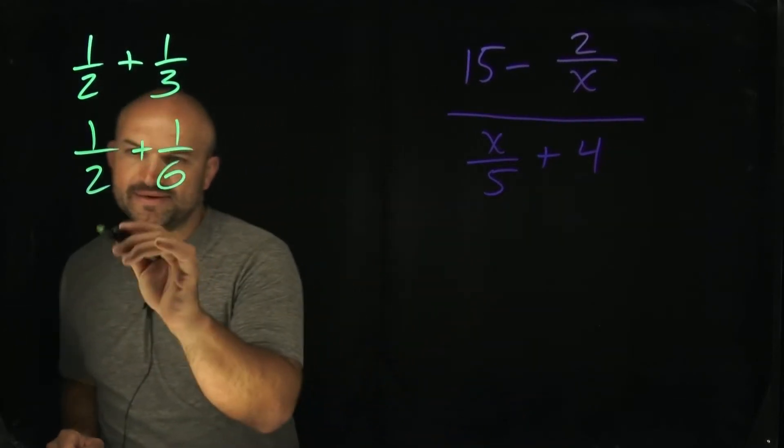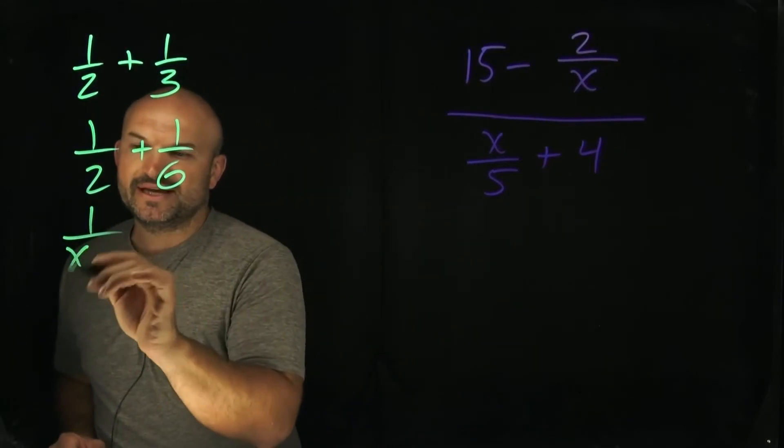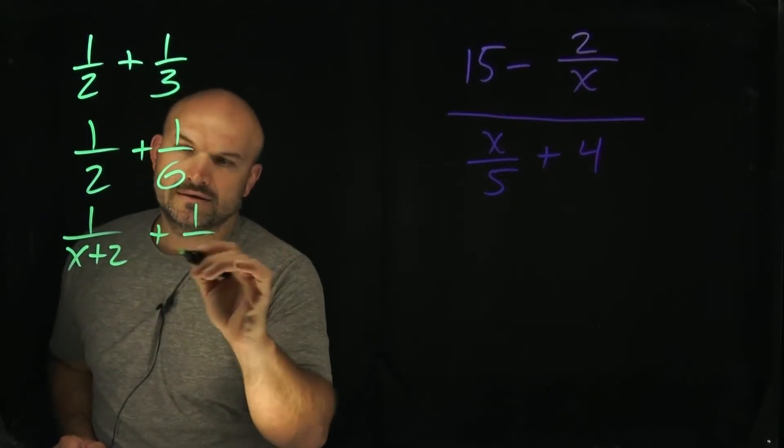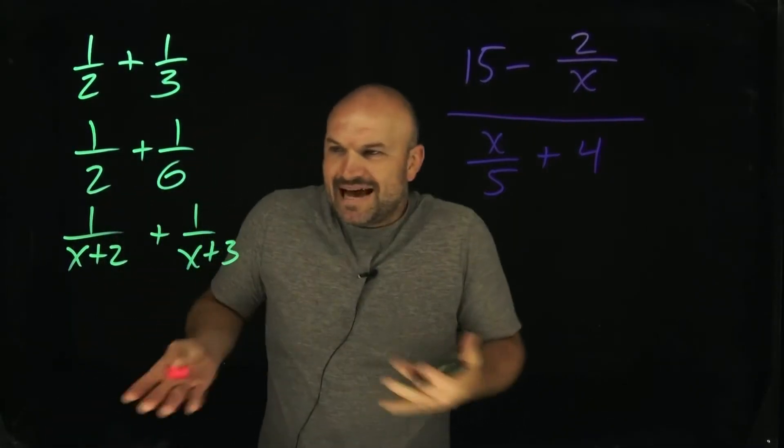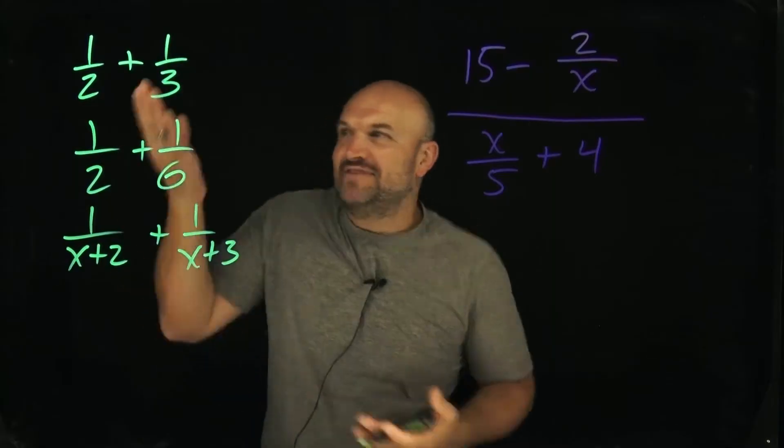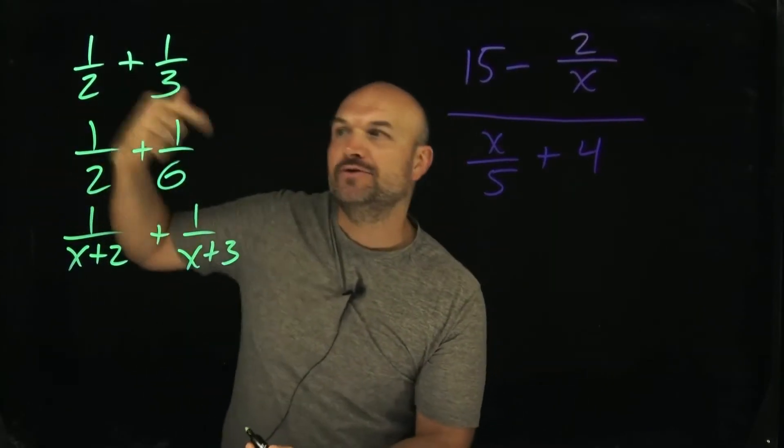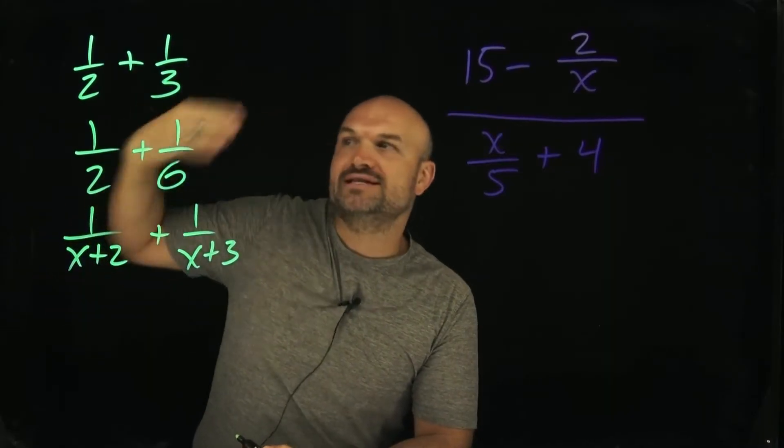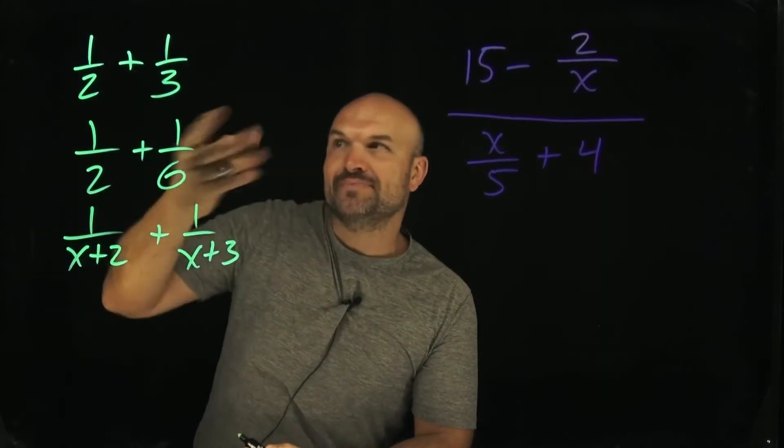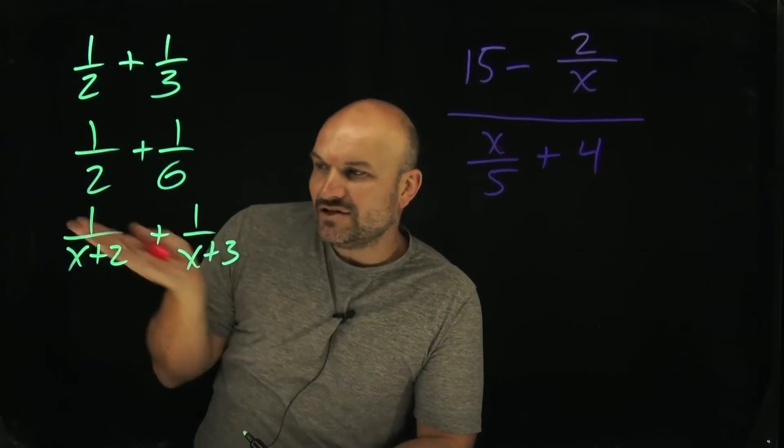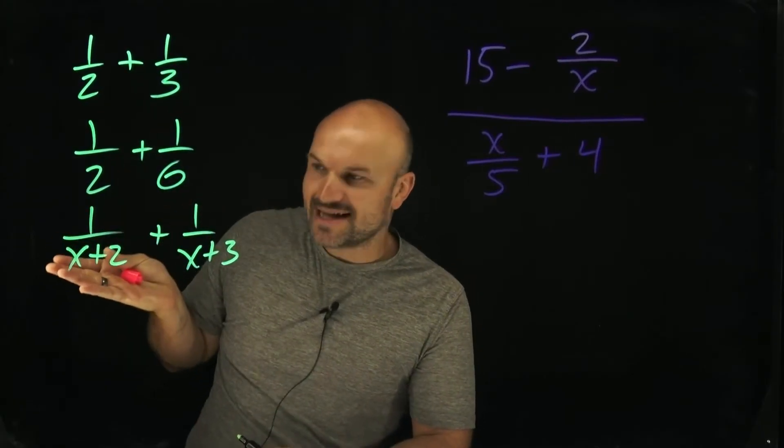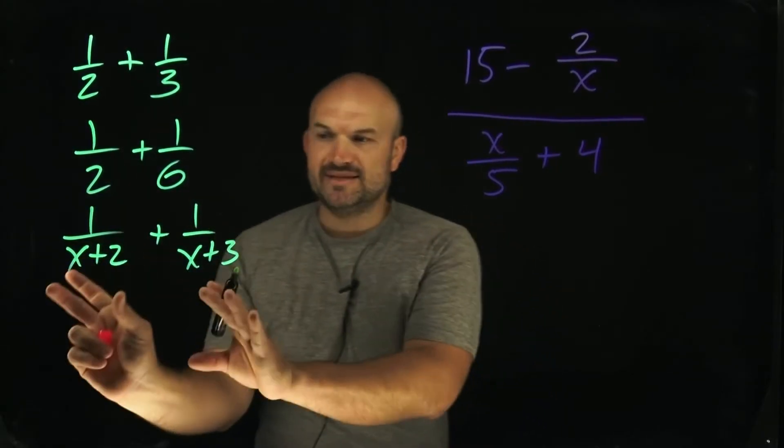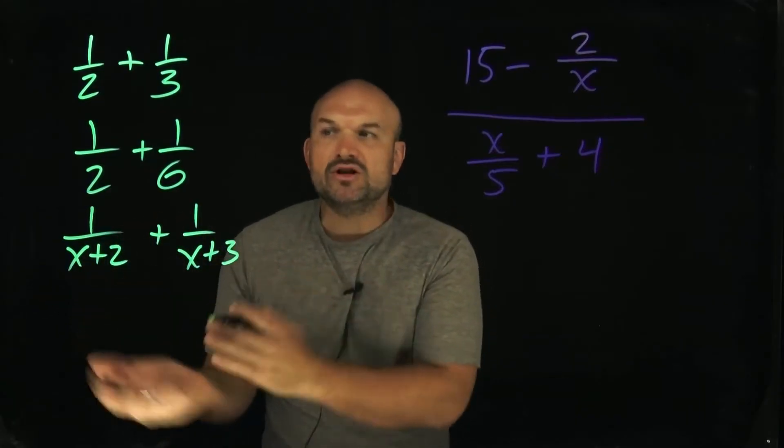However, the reason why this was important is when we started doing something like when we added expressions, a lot of times, what do these have in common? I don't know what the factors are here. At least with 2 and 3, we can count like 2, 4, 6, 8, 10, 12, and then 6, you can do 3, 6, 9, 12. I can see what the factors are. But what the heck are the factors of x plus 2 and x plus 3? That's kind of confusing. So what we did when we had something like this is we practiced just multiply your denominators.